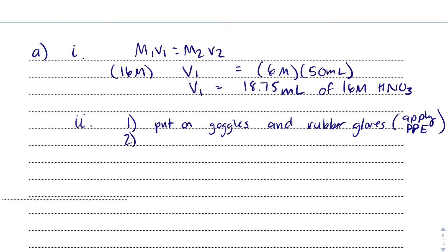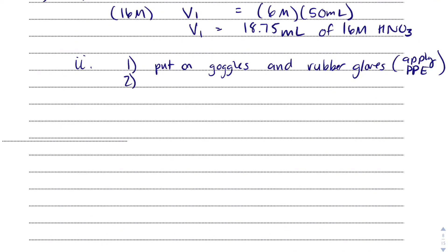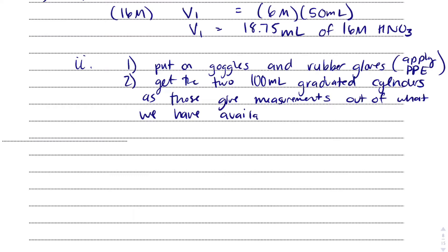A common mistake a student would make is that they would say we will use the beaker to measure stuff. If you've taken chemistry with me, you know beakers are great at holding stuff, but they're not great for actually making measurements. The markings are more of a guideline rather than a legitimate measurement. So I'm going to say get the two 100 milliliter graduated cylinders, as those give the best measurements with what we have available.